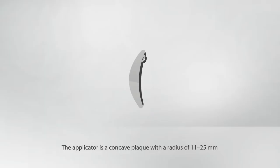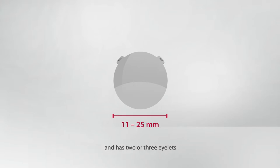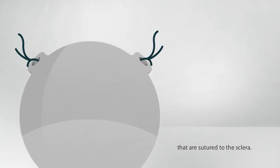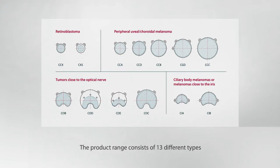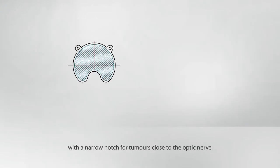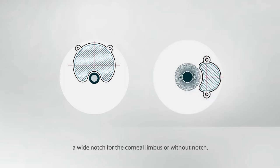The applicator is a concave plaque with a radius of 11 to 25 mm and has two or three islets that are sutured to the sclera. The product range consists of 13 different types with a narrow notch for tumors close to the optic nerve, a wide notch for the corneal limbus or without notch.